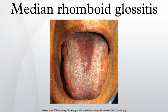History – Historically, this lesion was believed to be a developmental defect of the tongue, caused by failure of the tuberculum impar to be covered by the lateral processes of the tongue. This was disproved when a study of 10,000 children were examined and no median rhomboid glossitis lesions were found at all. Since then, a consistent correlation with C. albicans has been demonstrated.